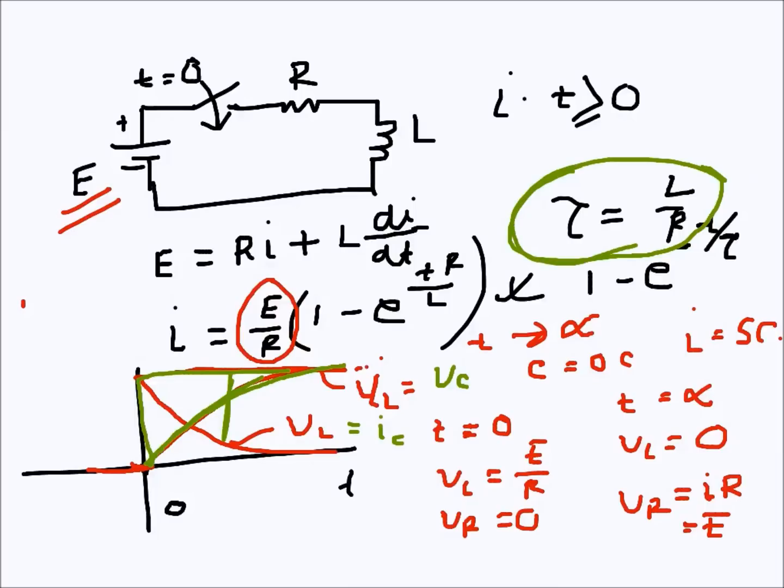V_L is E here initially. The voltage V_L starts at E and then decays. It's not the same scale - there's a voltage scale and a current scale. The current rises up to E/R.